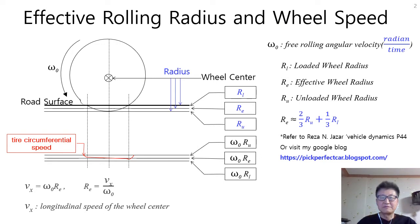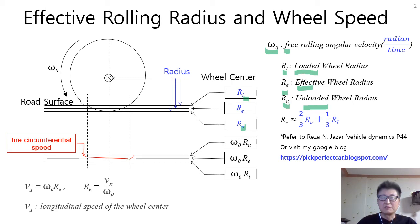Let's take a look at the concept of effective rolling radius and wheel speed. Let's call the free rolling angular velocity by omega sub 0, loaded wheel radius by R sub L, effective wheel radius by R sub E, and unloaded wheel radius by R sub U. When a car stops, the tire is vertically loaded. The vertical wheel radius to the road surface is R sub L, and unloaded circumferential radius is R sub U. When the car starts on a straight and level road, the longitudinal speed of wheel center V sub X is neither omega sub 0 multiplied by R sub L nor omega sub 0 multiplied by R sub U.